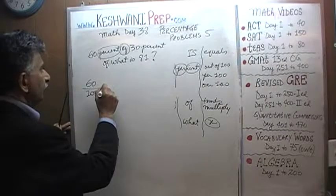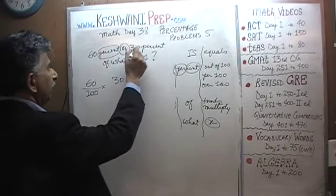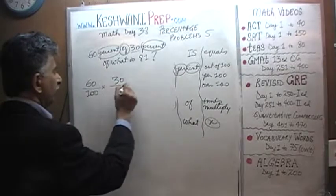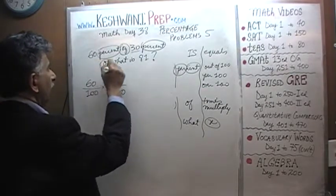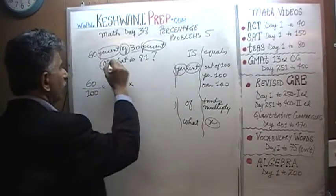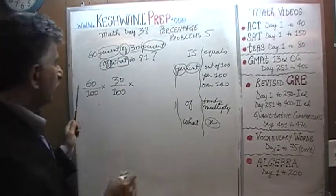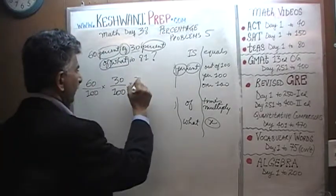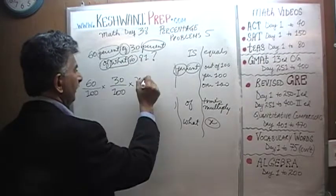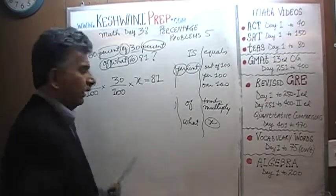So 60% of 30% — again, percent means per 100. 'Of what?' — this is our unknown, this is what we are solving for, so we represent that with letter X. And then 'is' means equals 81. So our equation is: (60/100) × (30/100) × X = 81.